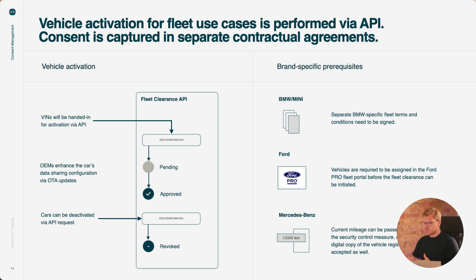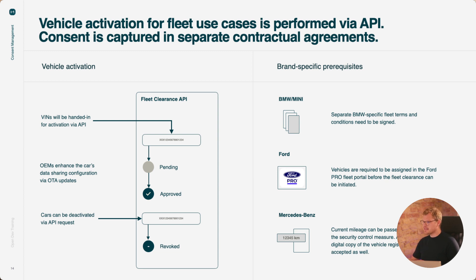Deactivation can also be done through an API. Now there are some specifics for different brands, starting with BMW/Mini. For BMW/Mini you also need to sign specific BMW fleet data terms and conditions. Once you sign them and hand them back to us, that's when we can activate API access for you — essentially showing BMW that you agree and that we at High Mobility process that data on your behalf and provide it to you through our API.